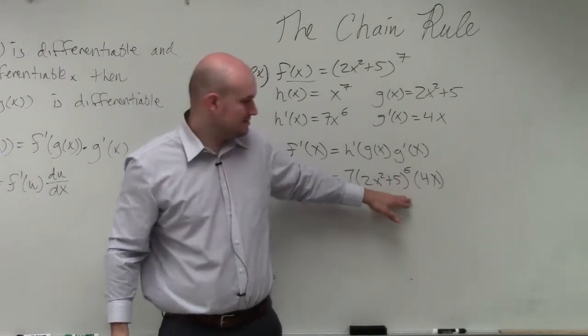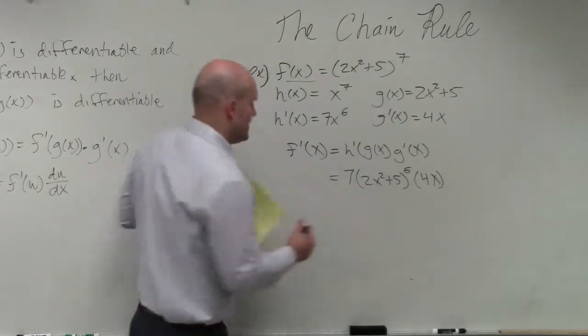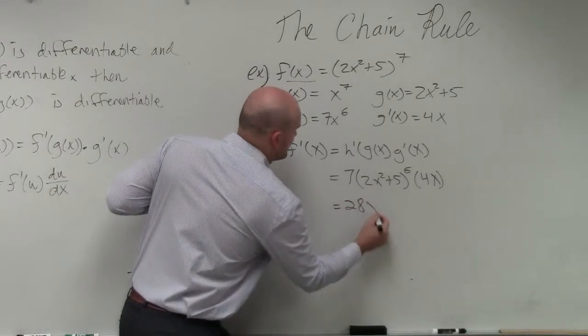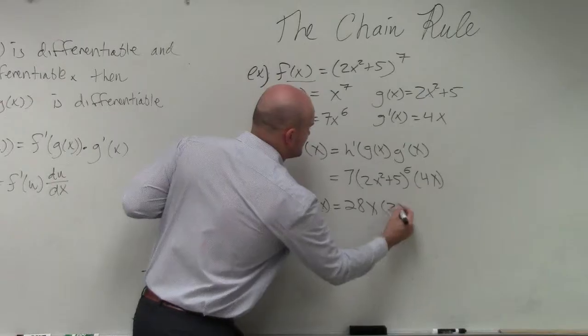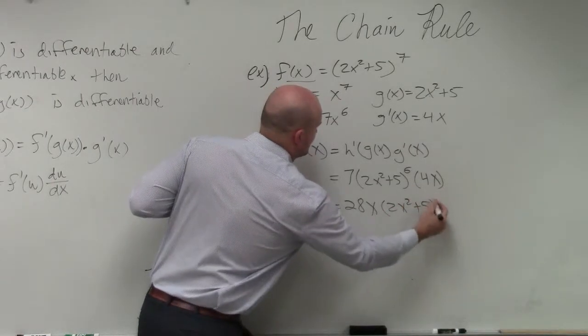I'm not going to expand this, and then I'll just multiply my two values. So therefore, I have 28x times 2x squared plus 5, raised to the sixth power.